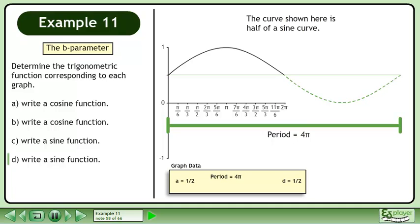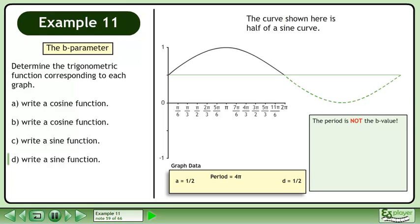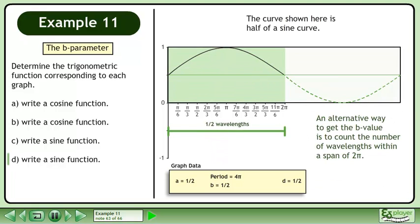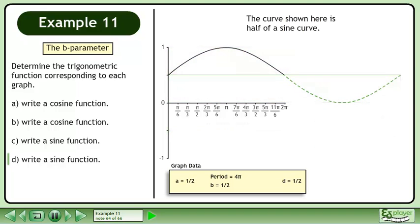The period is 4 pi. The period is not the b value. We can use the formula b equals 2 pi over p to get the angular wave number. Plug in 4 pi for the period. Reduce the fraction and cancel the pi's to get b equals 1/2. An alternative way to get the b value is to count the number of wavelengths within a span of 2 pi. We have not covered the c value yet, so just use 0.